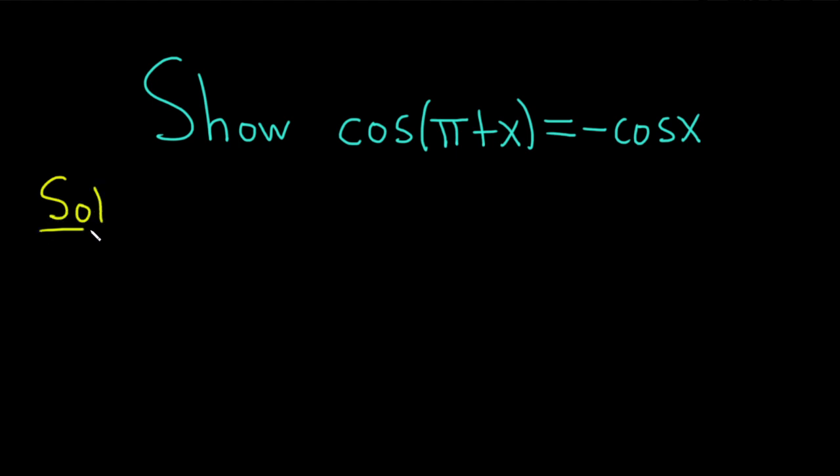Solution. First I'm going to write down a trig identity that we're going to use for this problem. If you have the cosine of A plus B, this is equal to the following. An easy way to memorize it is it's cosine cosine. So it's cosine A, cosine B.